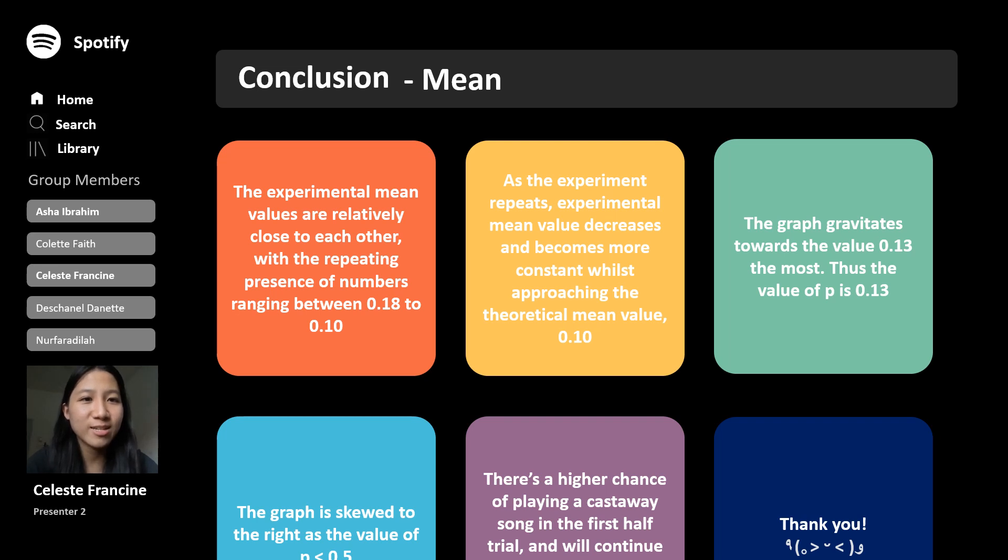Not to mention, as the experiment repeats, the value of the experimental mean decreases and becomes more constant whilst approaching the theoretical mean value, 0.1. Also, the graph gravitates towards the value 0.13 the most, making it the value of p.